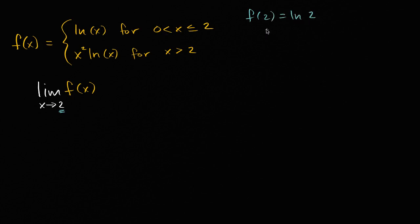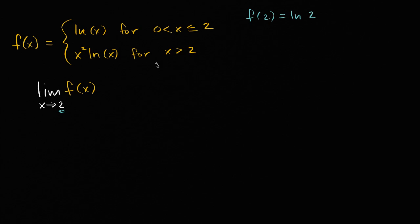But that's not necessarily what the limit is going to be. To figure out the limit, we should think about what's the limit as we approach from the left, what's the limit as we approach from the right, and do those exist? And if they do exist, are they the same thing? If they are, then we have a well-defined limit.